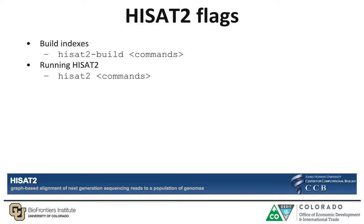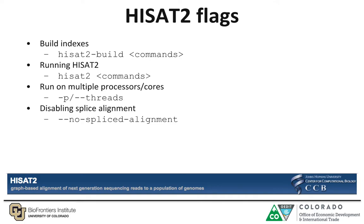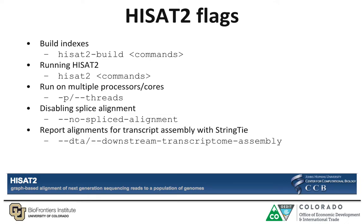The next step would be to run HISAT2 using the HISAT2 command. To run on multiple processors or cores, HISAT2 provides a flag called "-p" that allows you to specify how many cores you'd want to request. The number of cores you specify should match the number of cores you request from the server. If your organism has very little to no splicing, you'd want to disable splicing alignment using the "--no-spliced-alignment" flag. And if you want to perform transcriptome assembly with StringTie as downstream analysis, you'd want to specify the "--dta" flag.